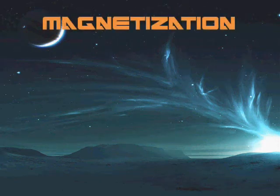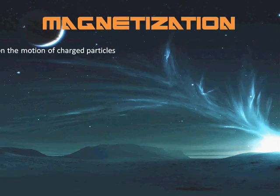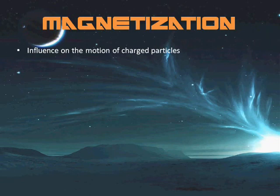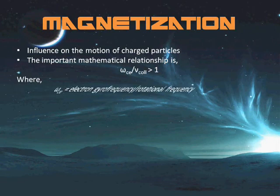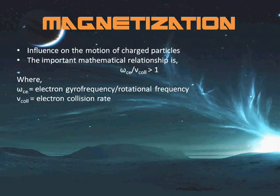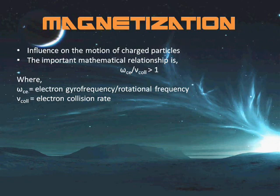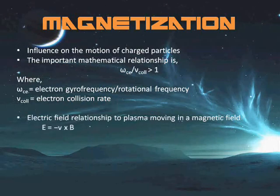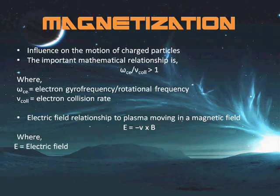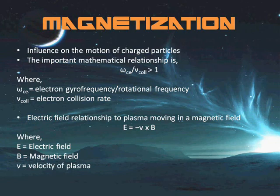Now I am going to talk about the magnetization property of plasma. A plasma is said to be magnetized if it contains a magnetic field strong enough to influence the motion of charged particles. An important mathematical relationship shown on the slide states that a particle on average completes at least one gyration or rotational motion around the magnetic field before making a collision. Magnetized plasmas are anisotropic, meaning their properties in the direction parallel to the magnetic field are different from those perpendicular to it. While electric fields in plasmas are usually small due to high conductivity, the electric field associated with plasma moving in a magnetic field is given by a relation shown on the slide, which is not affected by Debye shielding — the damping of electric fields caused by the presence of mobile charge carriers.